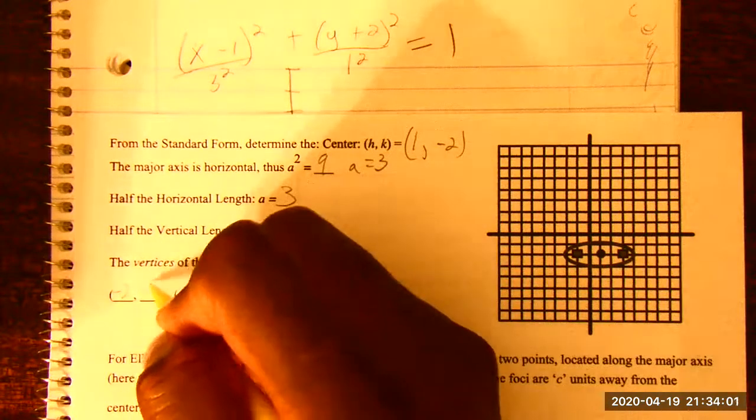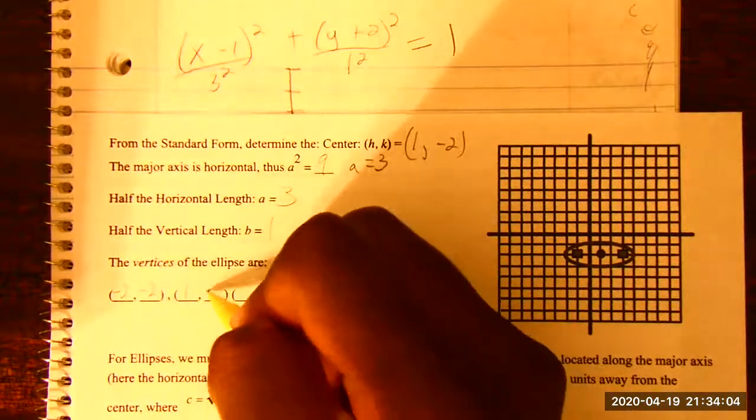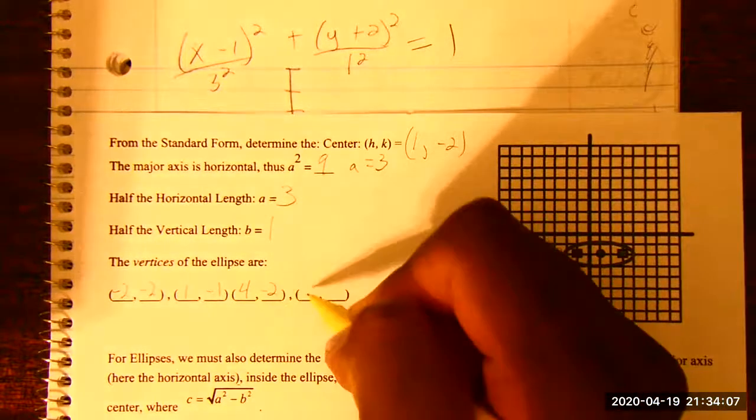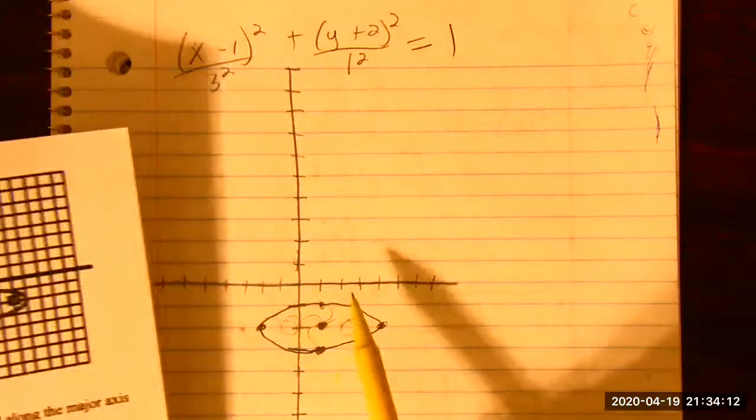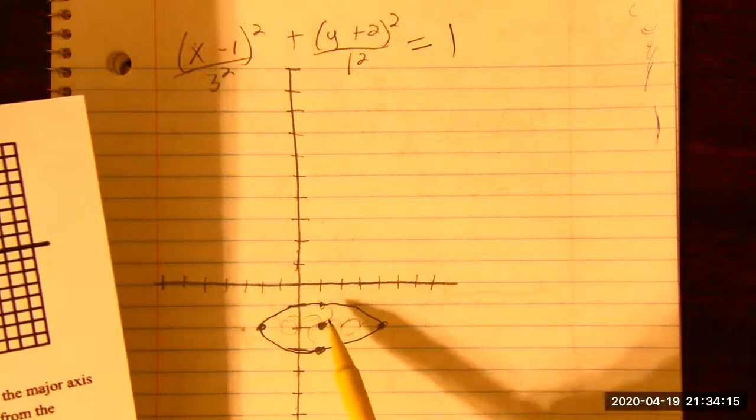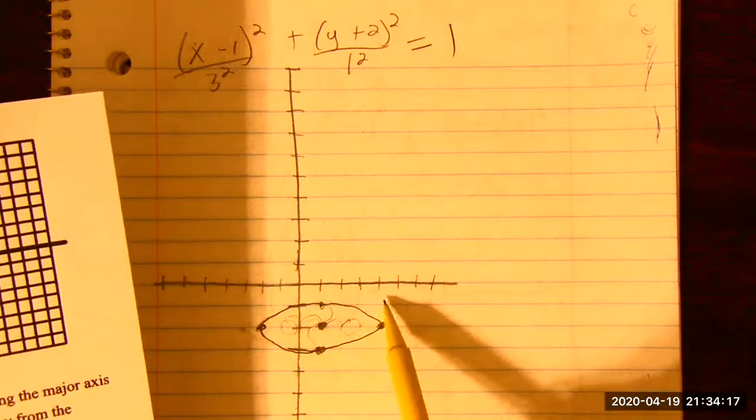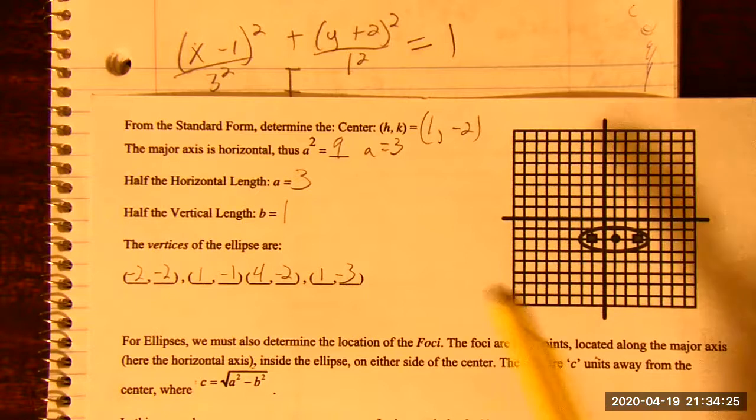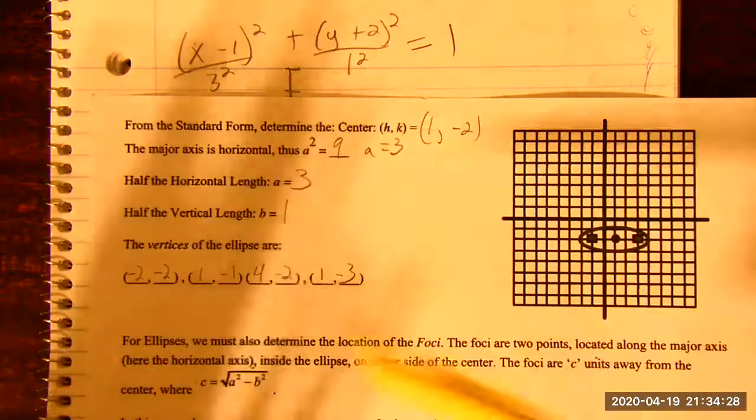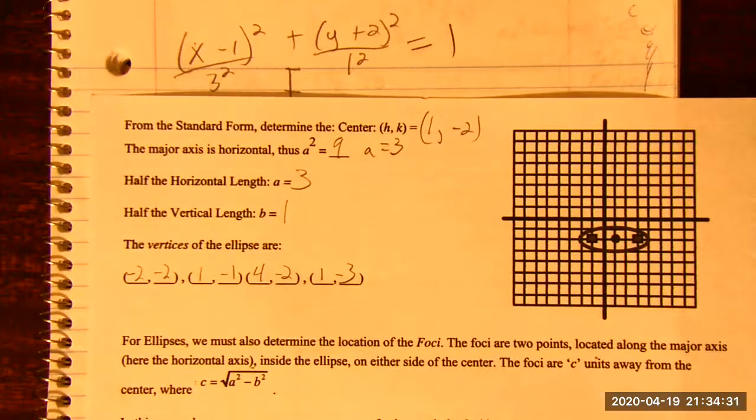Vertices of the ellipse. Negative two, two, one, negative one. Four negative two, one negative three. And we know it's the major simply because nine is big, nine is bigger than one, three is bigger than one. The major and minor jumps around whichever ones. And if the major, if A and B are the same, then you don't have an ellipse. You have a circle.